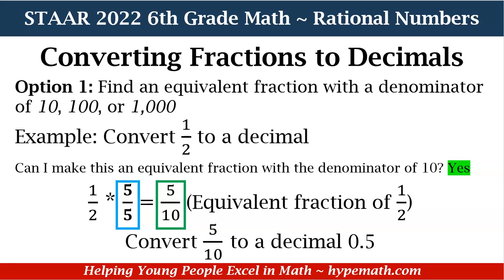So we have 1 half. We're looking at that denominator and asking ourselves: what number can I multiply by 2 in order to make 10? The answer is 5. So we're going to multiply 5 with the numerator and the denominator — that is where we get 5 over 5. So 1 times 5 is equal to 5 and 2 times 5 is equal to 10. 5 tenths is an equivalent fraction of 1 half. All we need to do is convert 5 tenths to a decimal, and that is 0.5, because the place right after the decimal point is the tenths place. That's our first option in converting fractions to decimals.